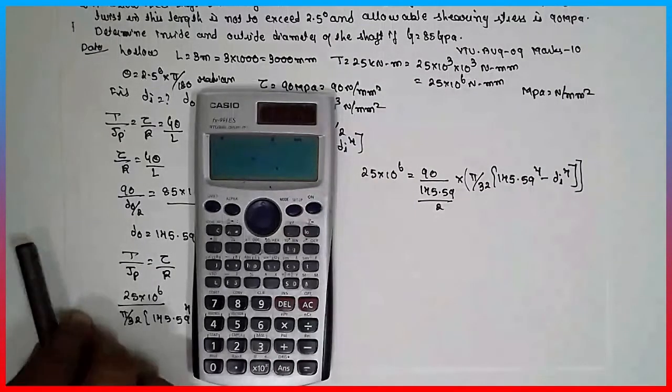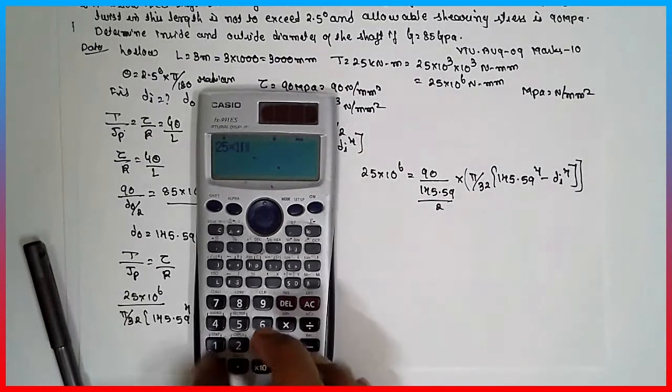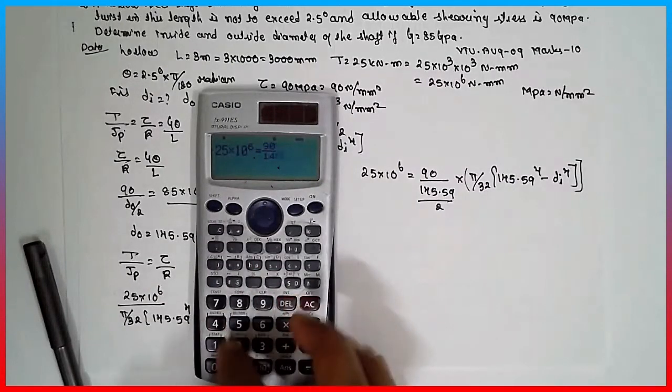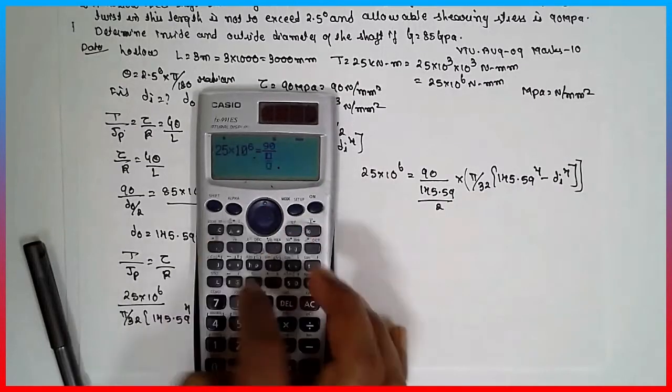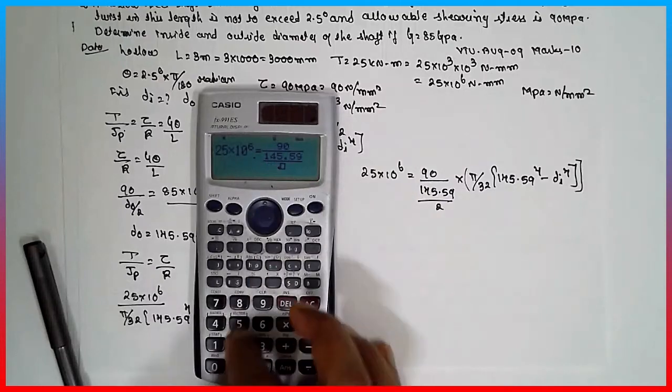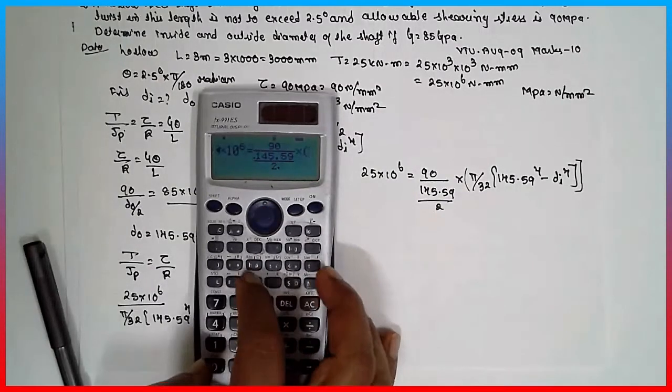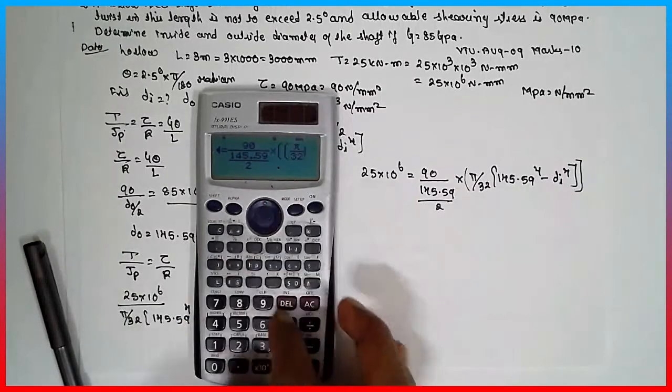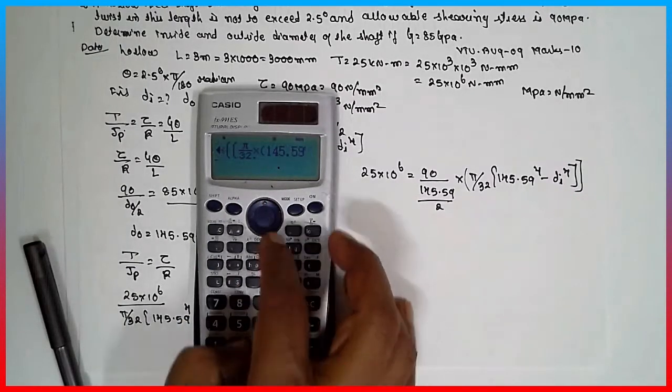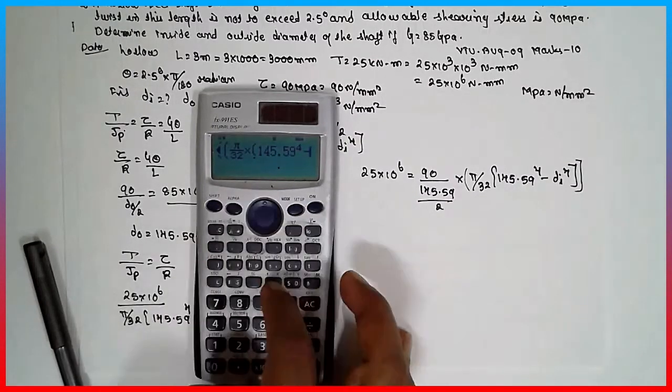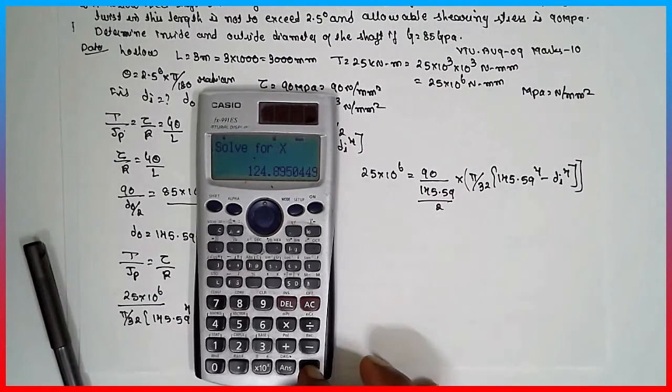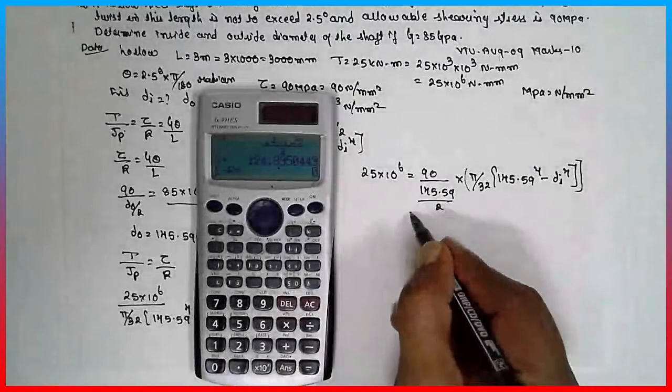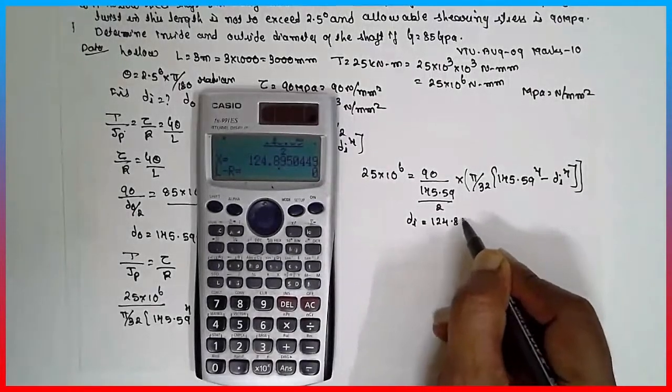By using the calculator, we have to solve 25 into 10 raise to 6, alpha is equal to 90, 145.59 divided by 2, open the bracket, shift pi divided by 32 into 145.59 raised to 4 minus alpha x raised to 4 is equal to, the answer is D_i equal to 144.89 mm.